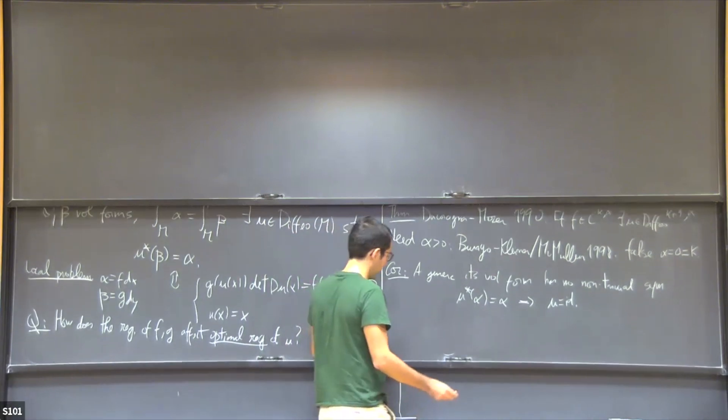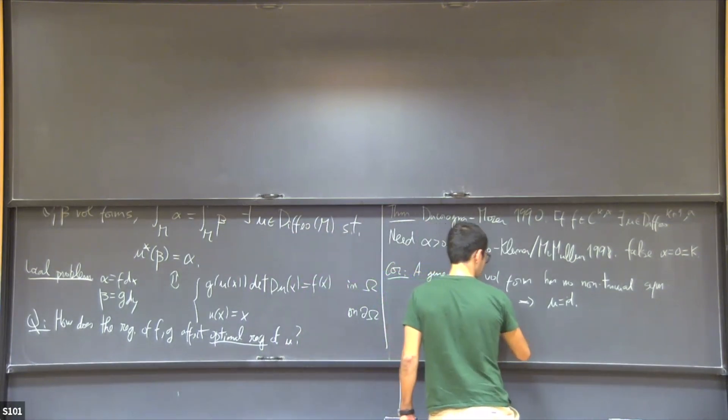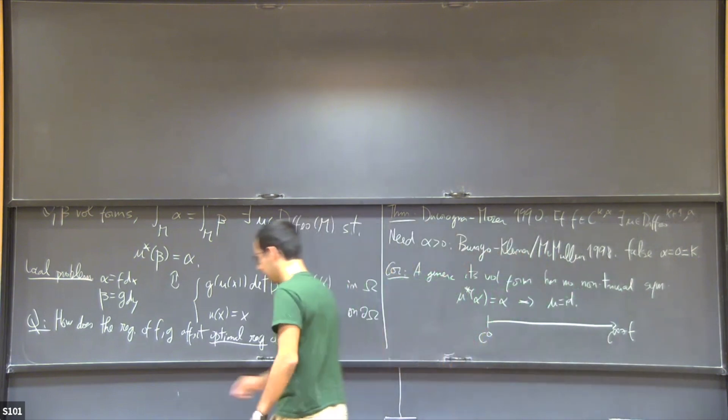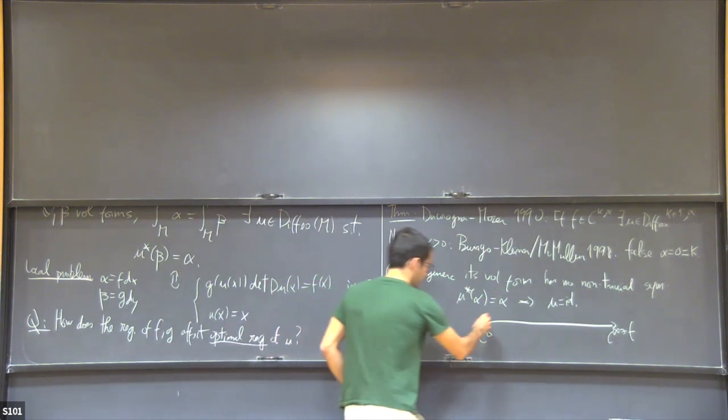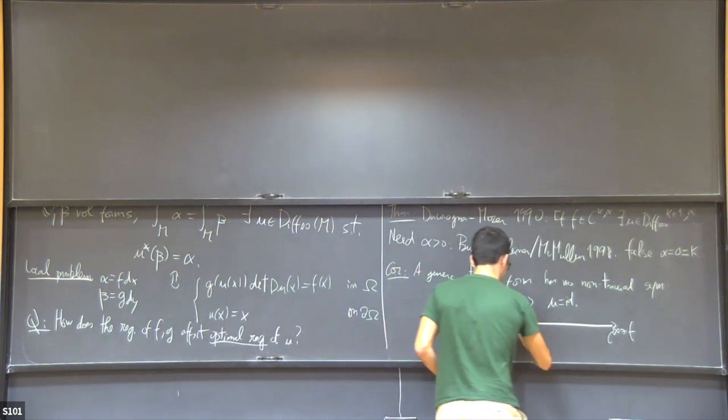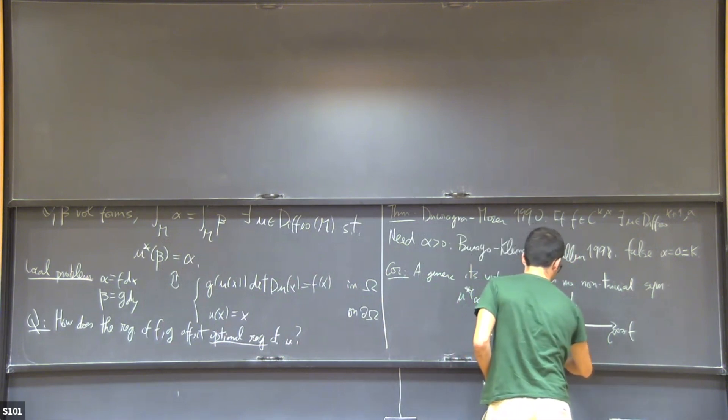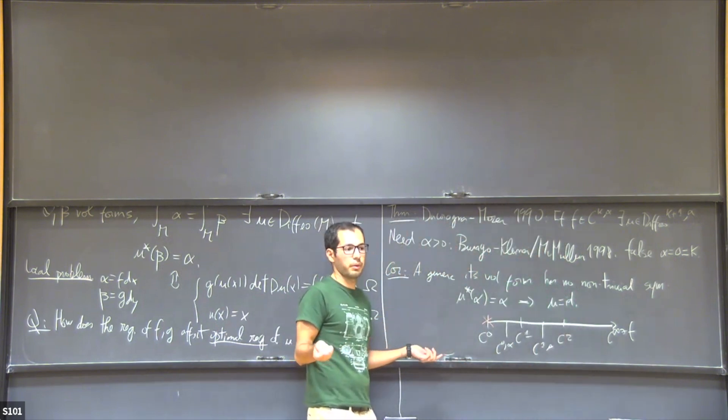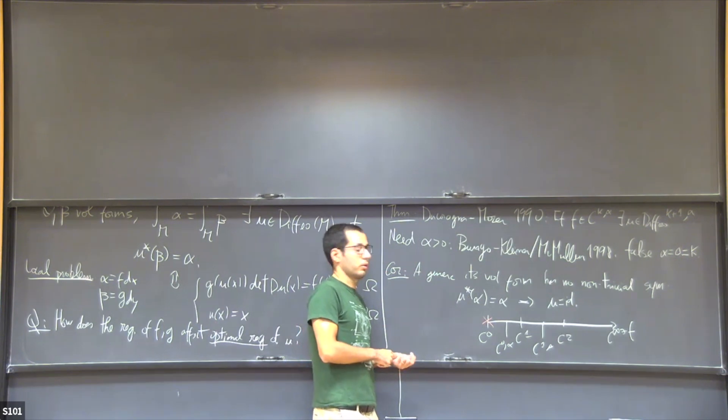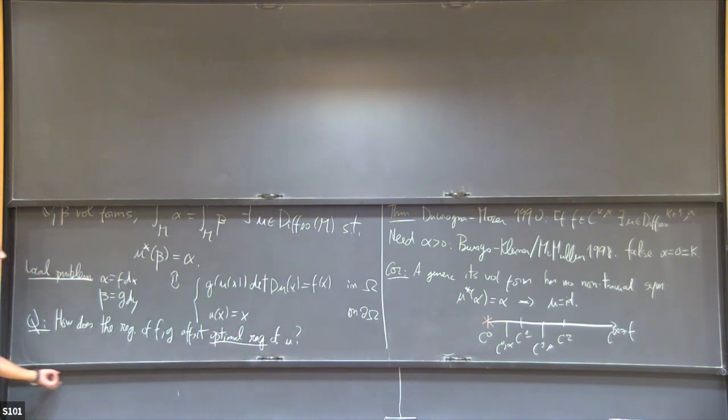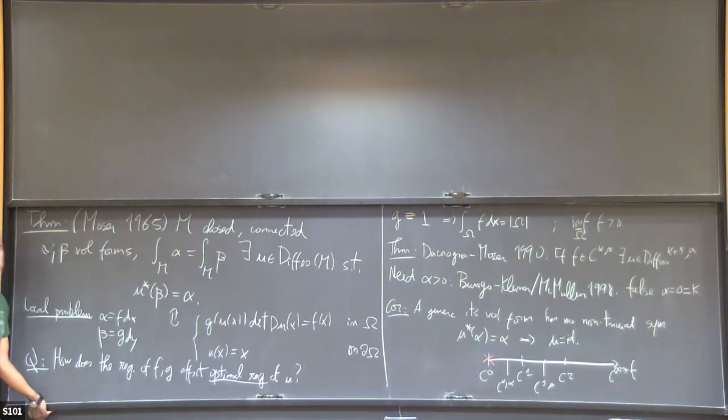So what is the state? Let me summarize here quickly what I have told you. This will be a regularity scale for our data, f. Here we have the beautiful Moser result. Here we have C^0, where Burago, Kleiner and McMullen tell us that there is not a result. Then we have the C^k spaces.